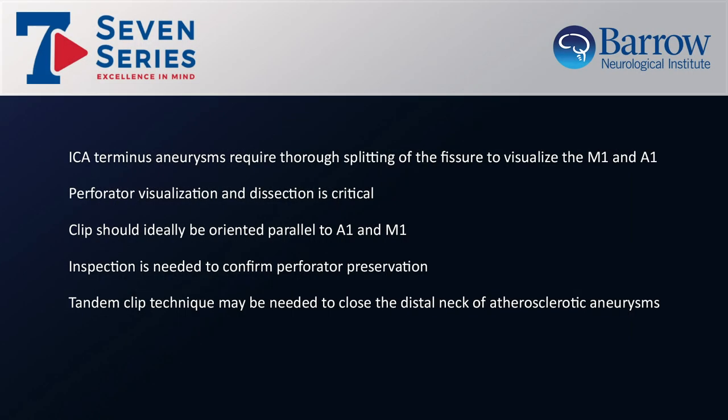In conclusion, ICA terminus aneurysms require thorough splitting of the sylvian fissure to visualize both the M1 on the lateral side and the A1 on the medial side. Perforator visualization and dissection is critical. The clip should be applied in a fashion oriented parallel to the A1 and M1. Inspection is needed post-clip to confirm perforator preservation. The tandem clip technique shown here may be needed to close the distal neck of atherosclerotic aneurysms.